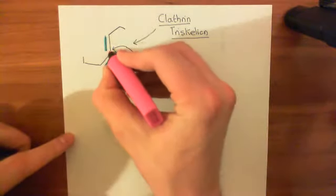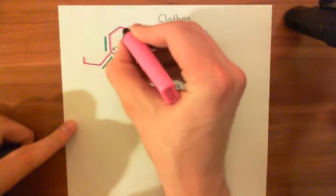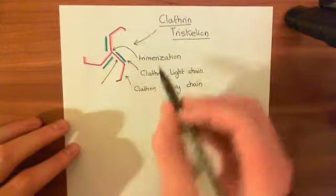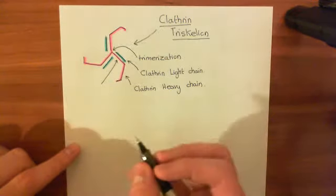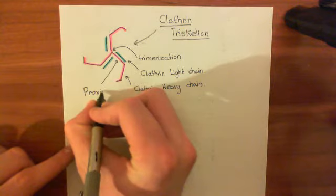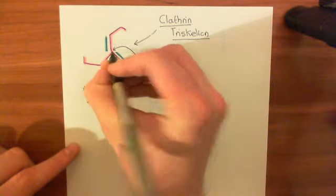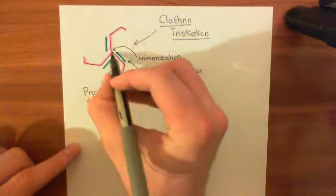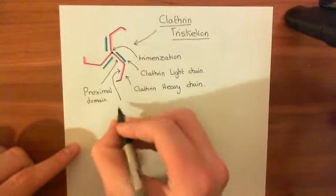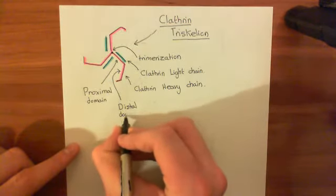This portion associated with the clathrin light chain — the equivalent of the thigh in our leg analogy — is called the proximal domain. You can now see what it's actually proximal to: it's proximal to the trimerization of these three heavy chains at the center, proximal to the trimerization domain. This portion, which is the analogy of the leg, is the distal domain — further away from our trimerization domain.